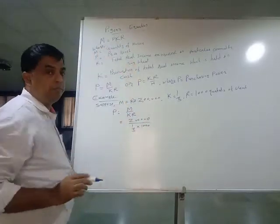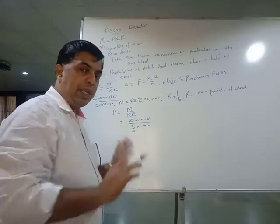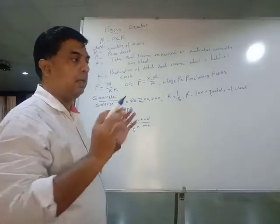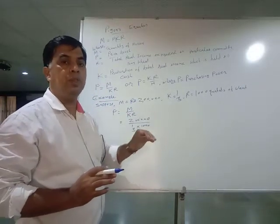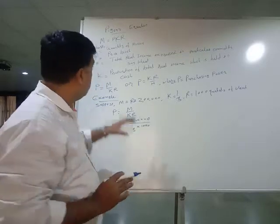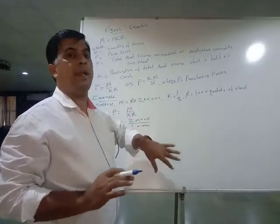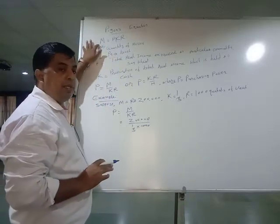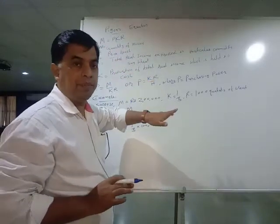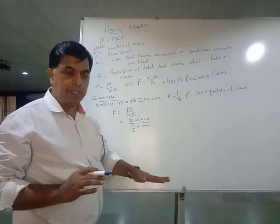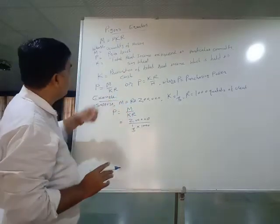A very important point is that Fisher's cash transaction approach emphasized only the supply aspect of money. According to Fisher, demand for money remains constant. But Pigou's Cash Balance approach lays adequate emphasis on both the supply aspect and the demand aspect of money. M represents the supply side, while PKR indicates the demand aspect.